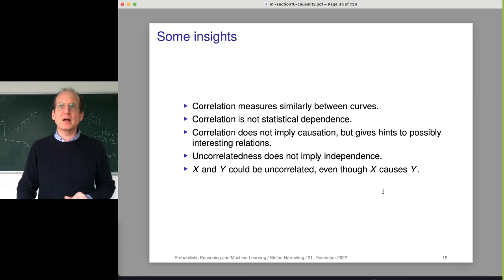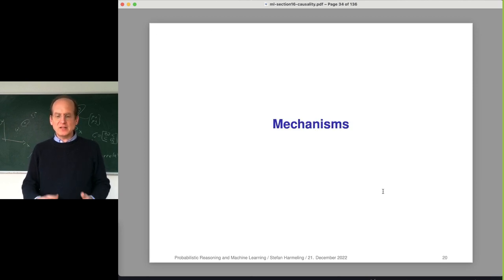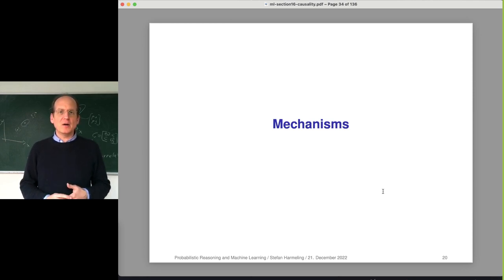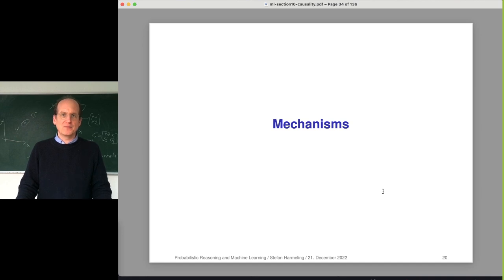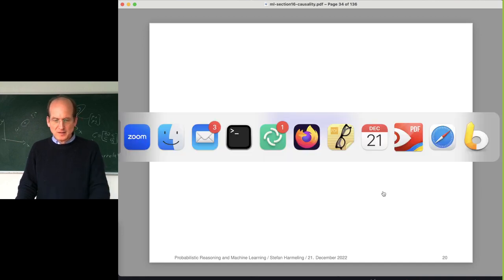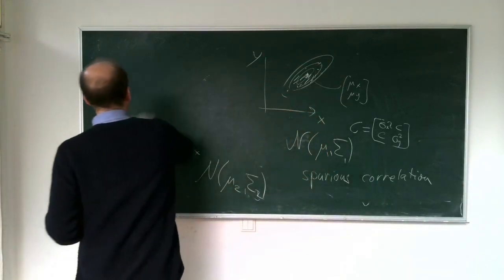The insight is: correlation measures similarity between two curves or time series. It is not statistical dependence. For Gaussian distributions these are closely related, but for most interesting non-Gaussian data in the world, correlation is not very useful for capturing the full dependence structure.